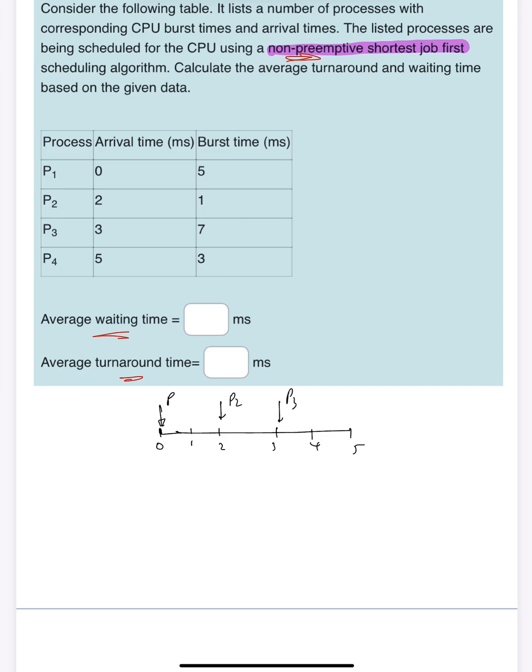What I need to do next is create the Gantt chart for this question. It's better to actually show the processes on the Gantt chart as well. It helps you understand what's going on. This is P1, this is P2, this is P3, and this is P4. It means that this is second zero, this is second two, second three, and second five.